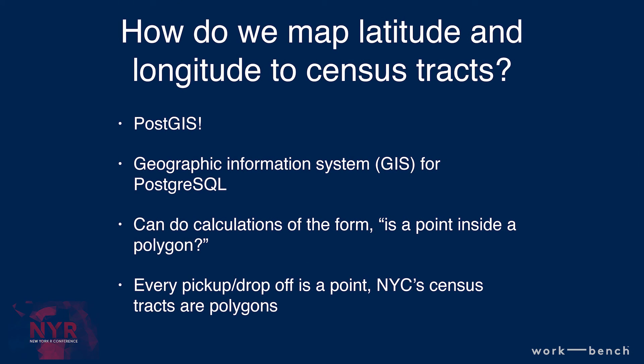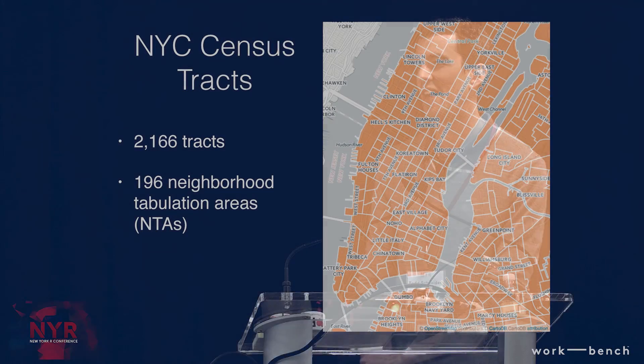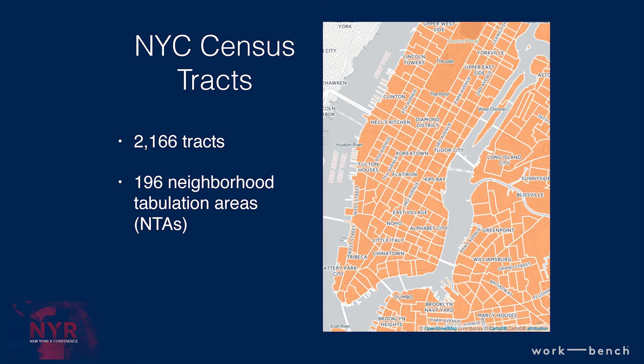I mentioned mapping latitude and longitude to census tracts. We use PostGIS, a geographic information system — a fancy way of saying a thing that can calculate whether a point is inside a polygon. Every taxi trip or bike ride has pick-up and drop-off points, and a census tract is a polygon, so we can ask: for each ride, what polygon did it start and end in? New York is divided into about 2,000 census tracts, each picked to have about 4,000 people. New York is also broken into 200 neighborhood tabulation areas — NTAs — which are collections of census tracts with names you'd recognize, like Upper West Side or Chinatown.